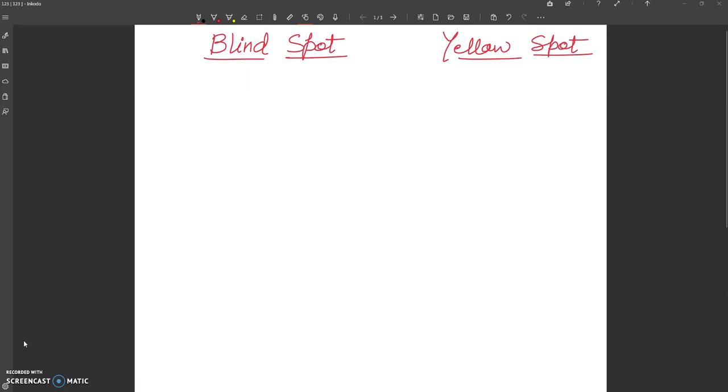So we are going to start here: blind spot and yellow spot. Blind, as the name suggests. Here rod and cones are absent. First point you will write here, rod plus cones both are absent.